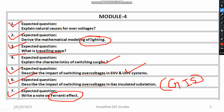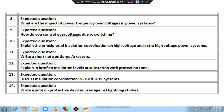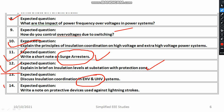Write a brief note on the Ferranti effect — one of the reasons for overloading. What is the reason for the Ferranti effect? You have to mention about capacitance and all those things. What are the impacts of power frequency over voltage in power systems? How do you control over voltage due to switching? Then the principle of insulation coordination — this is already repeated. Write a brief note on surge arrestors. Explain in brief the insulation levels of substation with the protective zones — zone 1 protection, zone B protection, zone C protection. Primary and backup protection you have to mention. Discuss the insulation coordination in EHV and UHV. Write a note on protective devices against lightning stroke — that is also important.